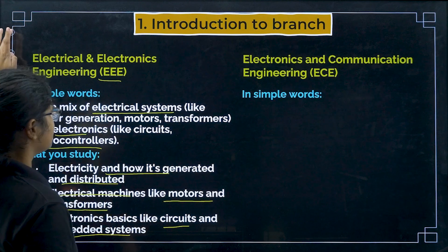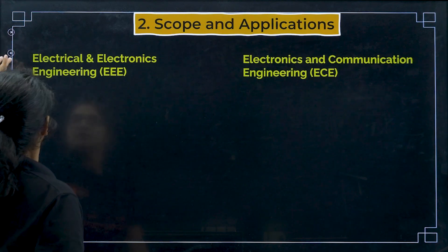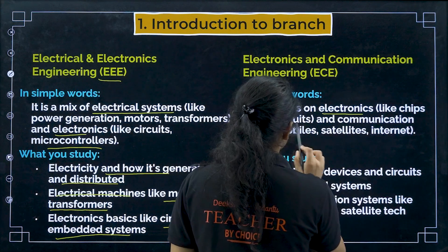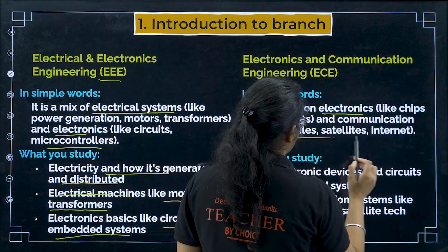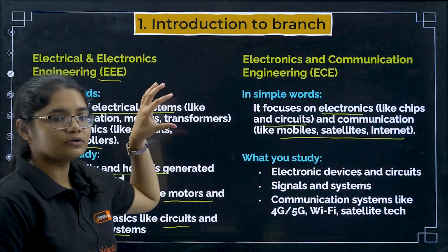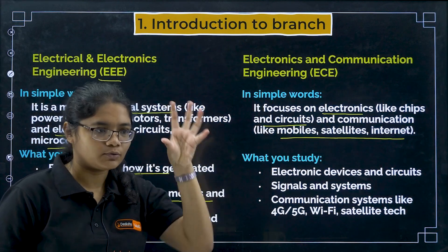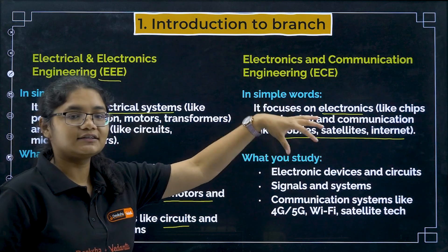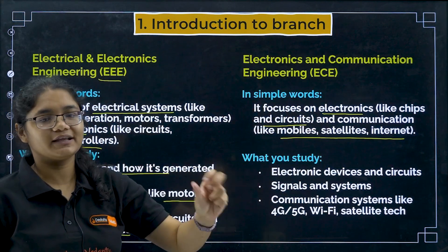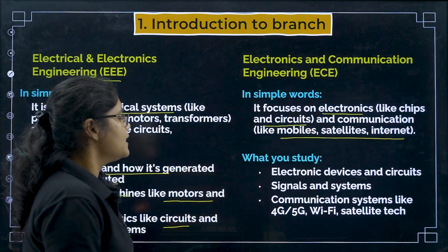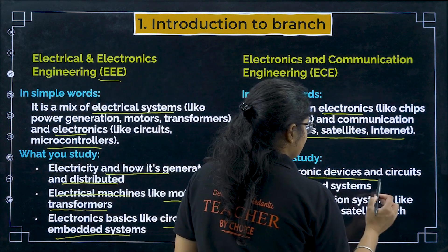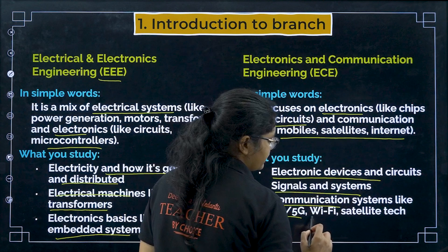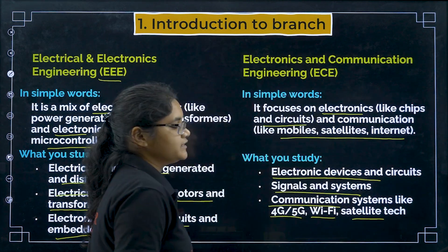Now talking about ECE — Electronics and Communication Engineering. In simple words, it focuses on electronics like chips and circuits, and communication like mobile, satellites, and internet. So rather than power generation and distribution, ECE covers electronics and communication systems like mobile and internet. You will study electronic devices and circuits, signals and systems, communication systems like 4G, 5G, Wi-Fi, and satellite technology.